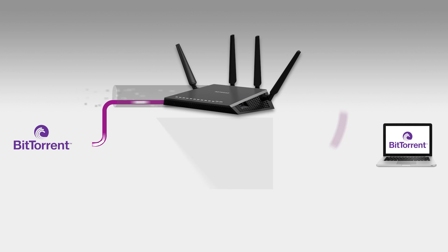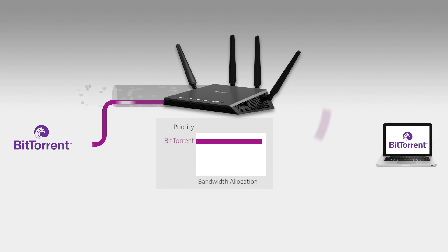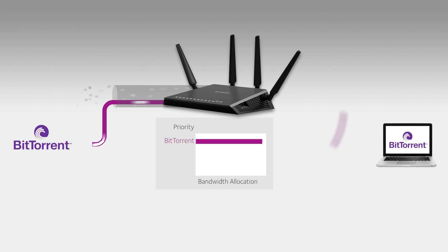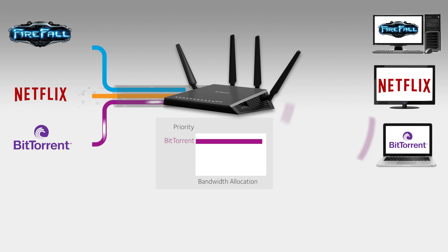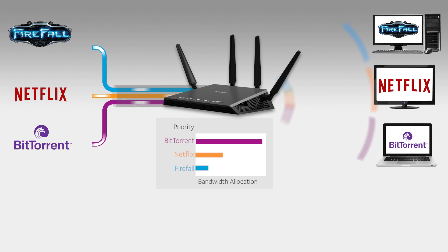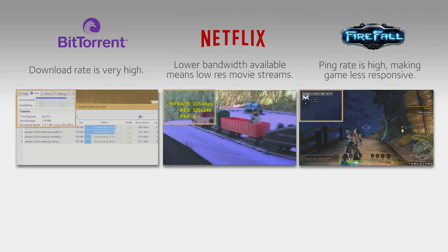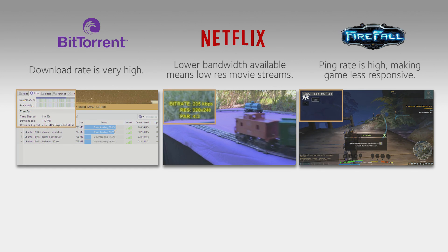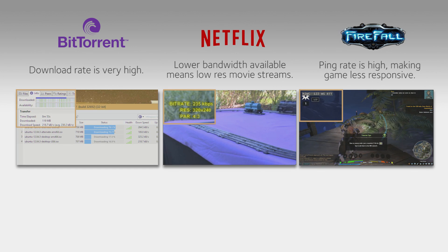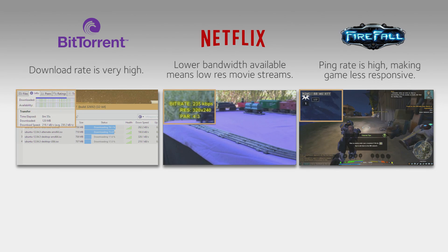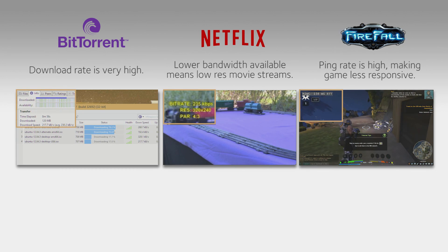With no QoS enabled, the X4 router simply allocates bandwidth on a first-come, first-served basis. This can greatly affect the user experience when lots of new apps and devices connect. With the majority of the bandwidth taken up by a BitTorrent download, Netflix viewing and online gaming suffer.